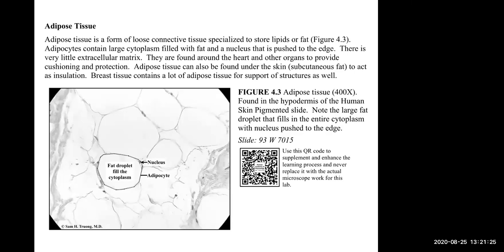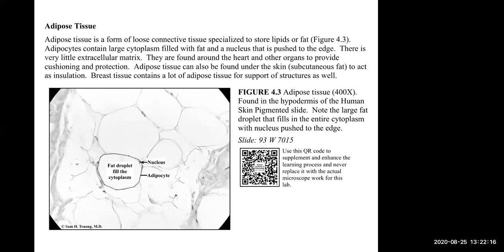Adipose tissue is your fat tissue. Each adipocyte — a fat cell — looks like a hollow circle. A fat droplet fills the entire cytoplasm of the cell, pushing the nucleus all the way off to the side. Adipose tissue stores all of your lipid or fat, which your cells need for energy. It's also found in your hypodermis — the layer underneath your skin — helping keep your body warm and protect your internal organs.